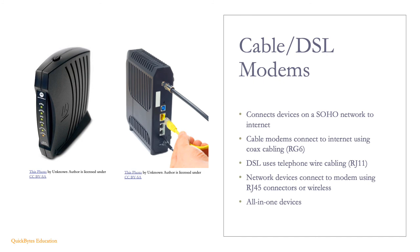Cable and DSL modems connect small office and home office networks to the internet. Cable modems connect to the internet using an RJ6 connector for coax cable. DSL modems use RJ11 connectors for telephone wire cabling. Devices on the network connect to the modem using RJ45 connectors or over the air using wireless.